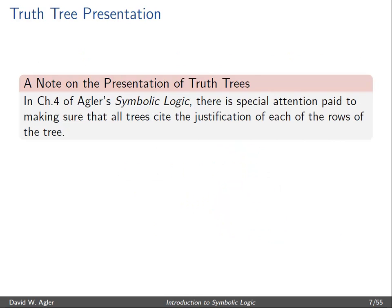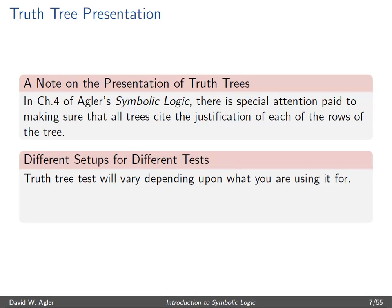So two quick notes about the presentation of truth trees here. In most introductory logic textbooks, there's special attention paid to the third column, which is the column for justification. In the presentation of the videos here, I won't pay too close attention to this third column, but I will state why each one of the formulas is on the line that it is.